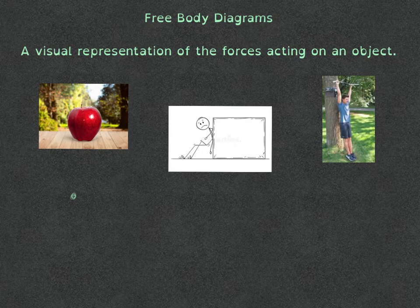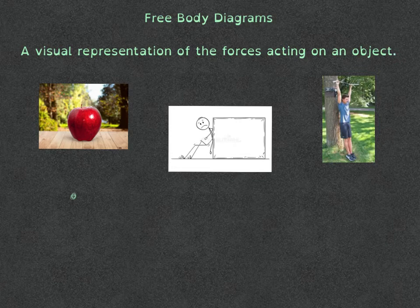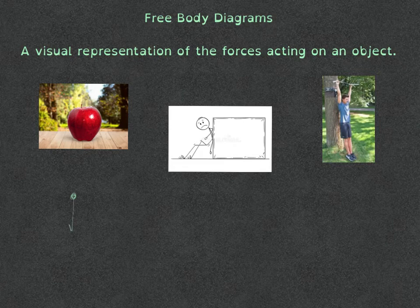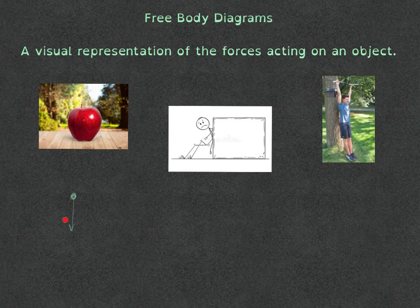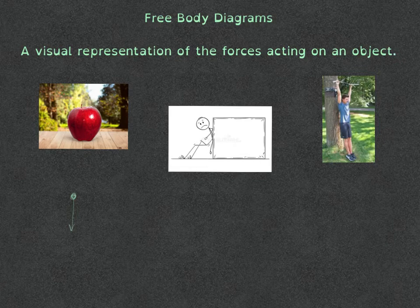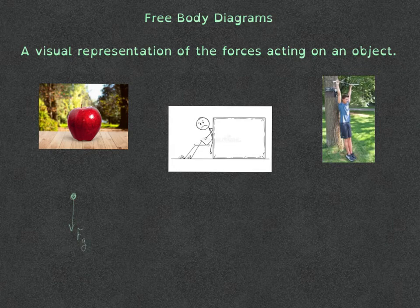Now first and foremost, every object that we look at, we know that one force is always acting on that object. And that force is the force of gravity. So we're going to draw an arrow in the downward direction because we know gravity pulls things downward. And we're always going to label our forces in our free body diagram. So I'm going to label force of gravity, F subscript G.